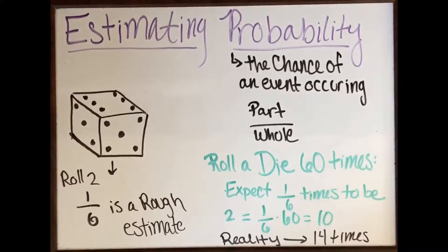But in reality, I just rolled a die and I got a two 14 times, so this is a rough estimate. We don't know exactly how the cards will play, but probabilities are a good way and a good model to expect where the die will land or to expect how likely the chance of an event will occur.